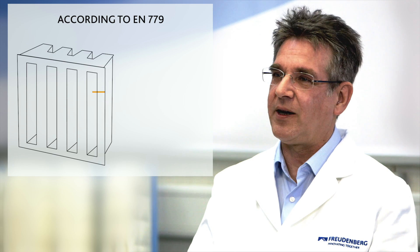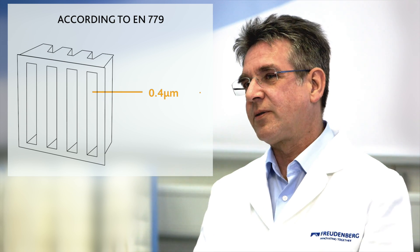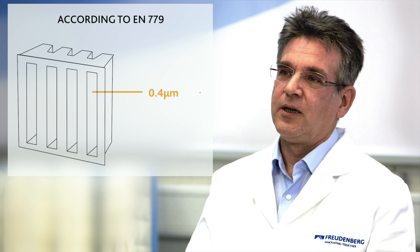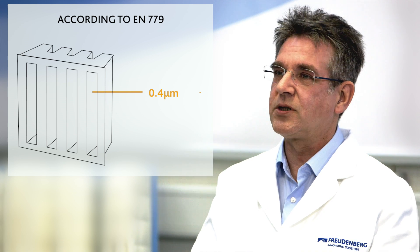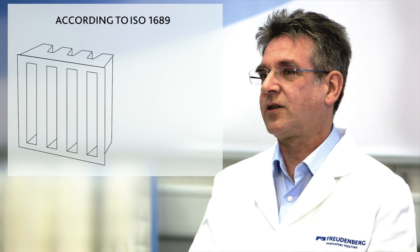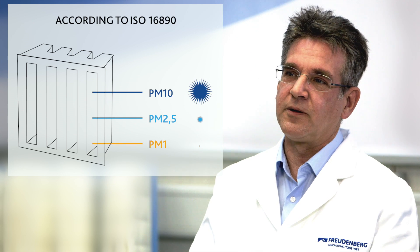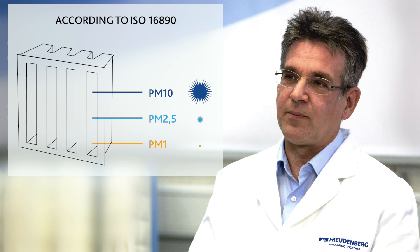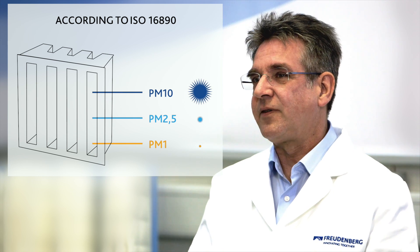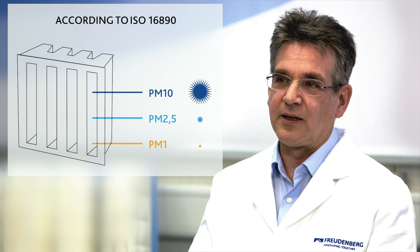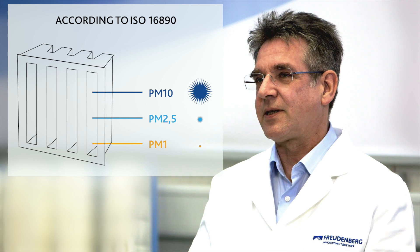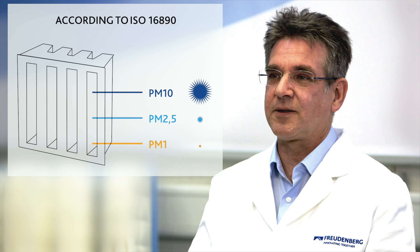Furthermore, the new standard considers the entire particle size range from 0.3 to 10 micrometers, which will enable us to evaluate a filter's efficiency for the fine dust fractions PM10, PM2.5, and PM1. For example, we will rate a filter in the future as an ISO EPM10 80% filter, which means it removes 80% of the PM10 fine dust fraction.